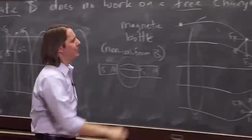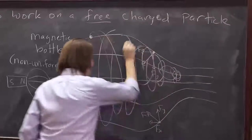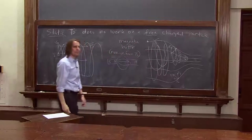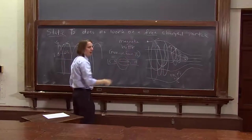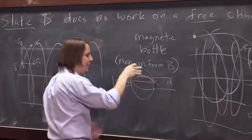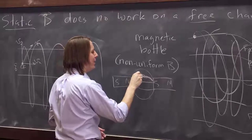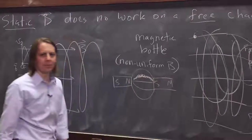So what happens actually is that the thing spirals and it bounces back. And if you have two of them, it's a bottle. The little particles will spiral along the field line. And then the non-uniformity of the field lines will make them come back. And it'll go to this side. And the non-uniformity will make it come back. And it'll go to this side and back and forth and back and forth.